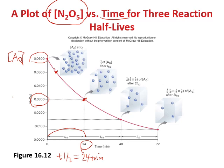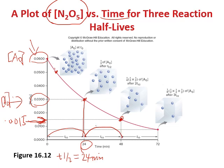What if we start from another point — 0.03 as the initial concentration? Half of 0.03 is 0.015. The time to go from 0.03 to 0.015 is 48 minus 24, which again gives you 24 minutes. So the half-life is the same no matter where you start.